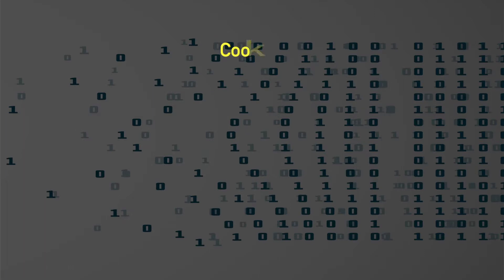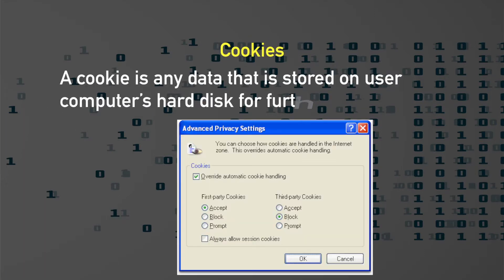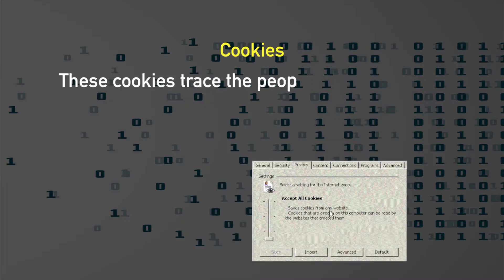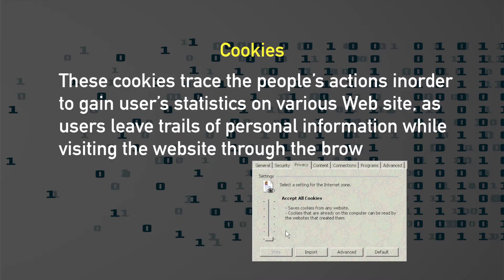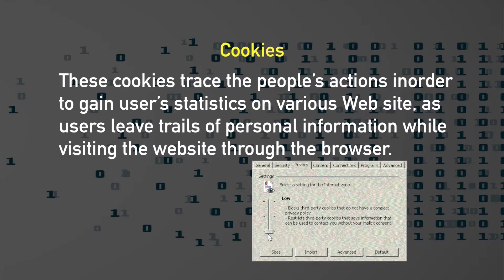Cookies are data stored on a computer's hard disk for further reference in future. These cookies trace people's actions in order to gain user statistics on various websites. Users leave trails of personal information while visiting websites through browsers.